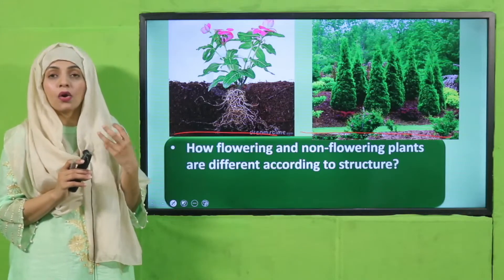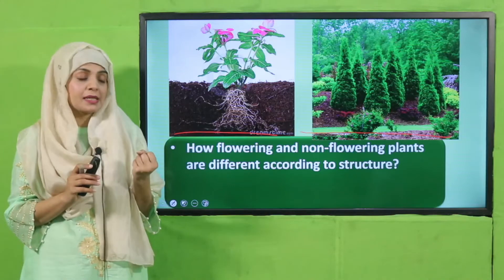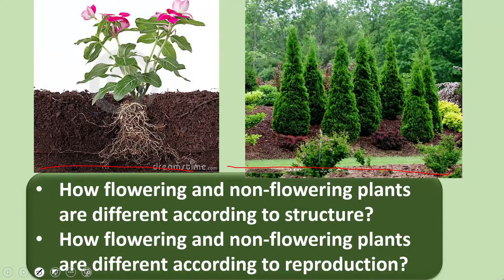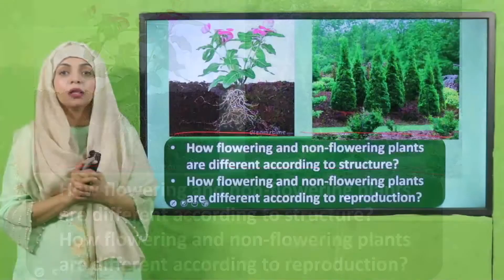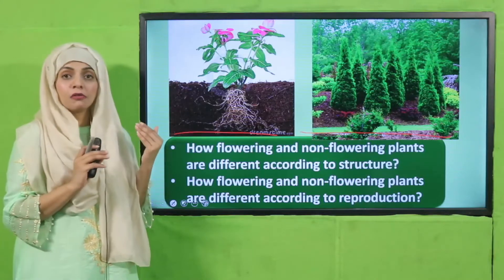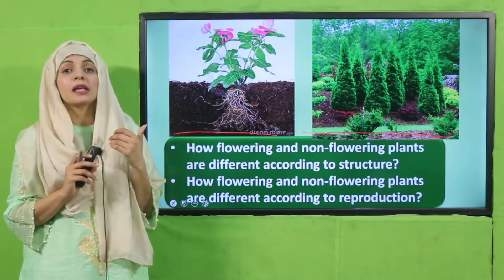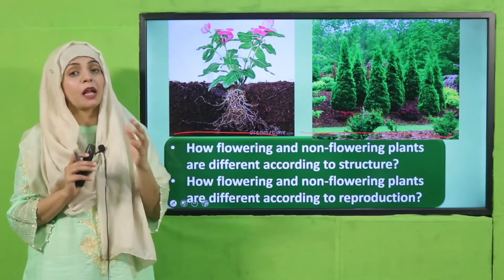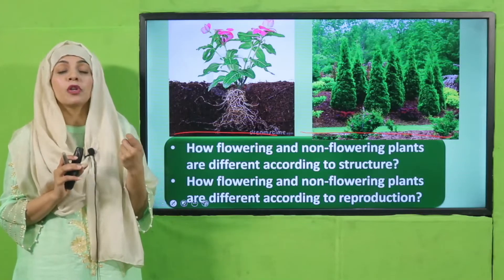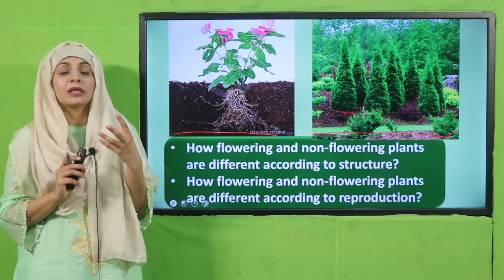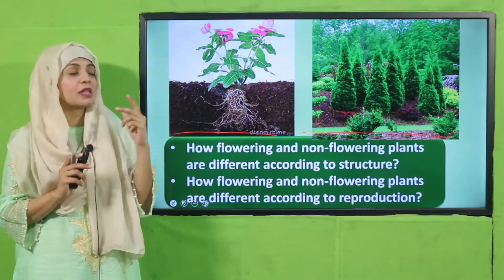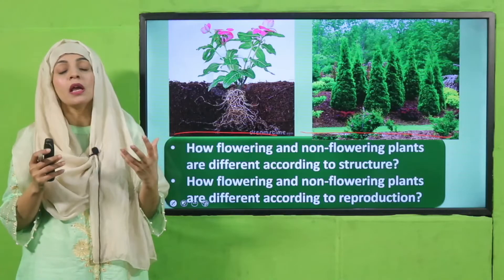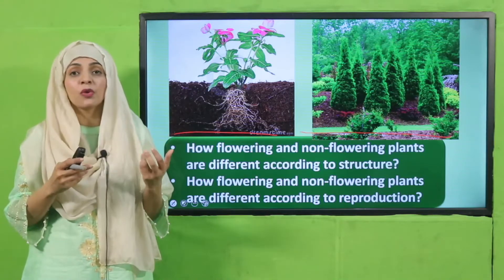How are flowering and non-flowering plants different according to reproduction? The reproductive part of the flowering plant is the flower itself, whereas the non-flowering plants reproduce through their spores or cones.